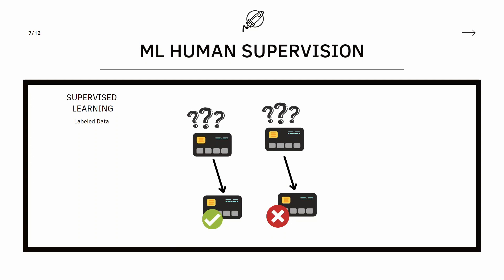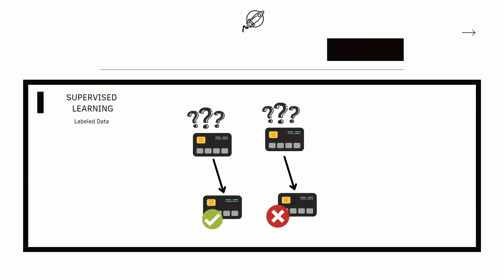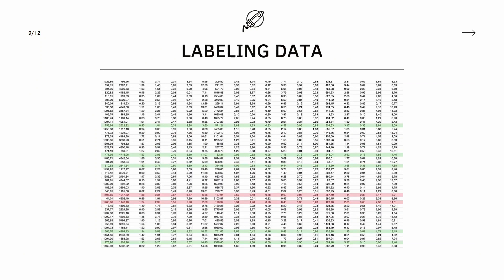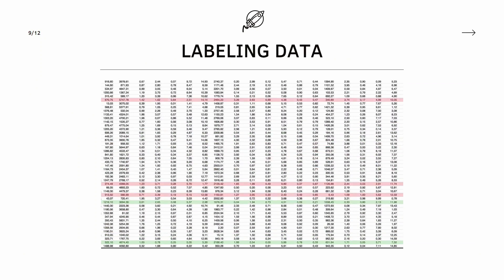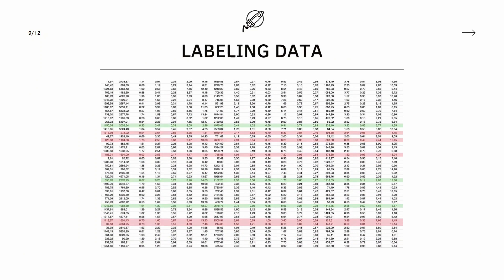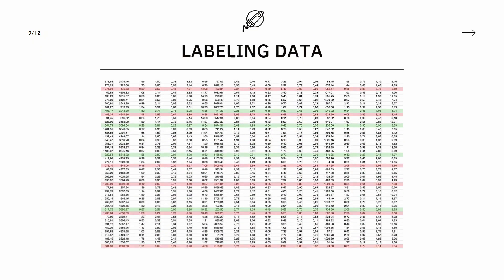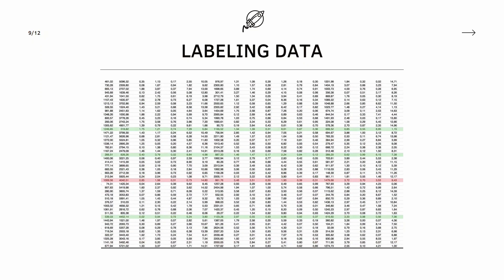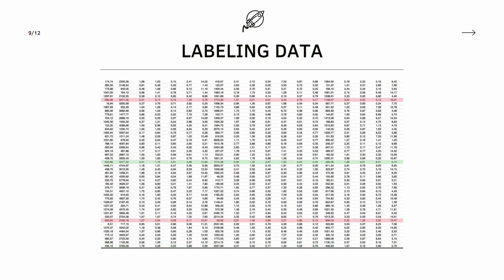Here we have two new transactions that just came in. We don't have any label for them, and the model will be able to look at this data and classify each as valid or fraud. But imagine looking at thousands of lines of data and classifying them one by one — it is too time-consuming, because to have labeled data we need to do it by hand.